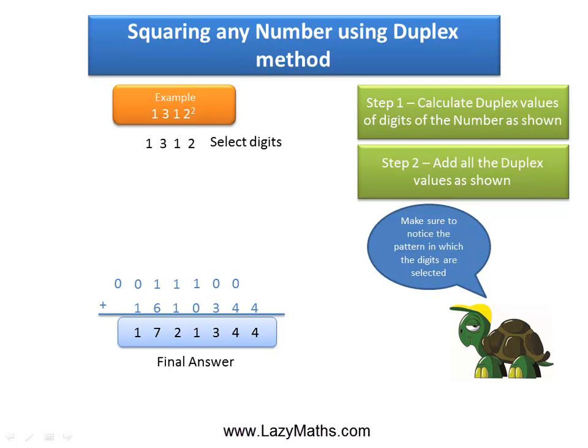So 1,312 squared is equal to 1,721,344. And that's it. Thank you.